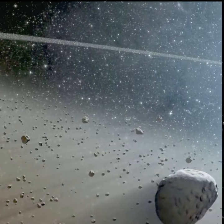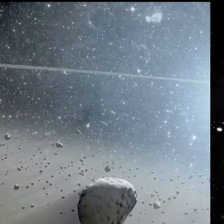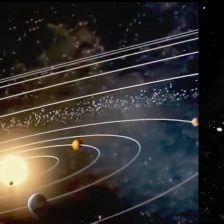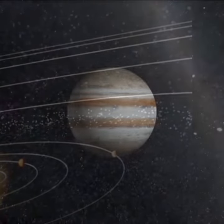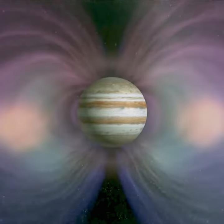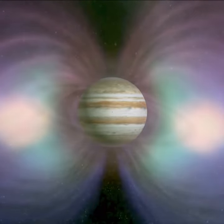These gaps in the asteroid belt are known as Kirkwood gaps, and they occur at distances where an orbit would be in resonance with the orbit of Jupiter. Jupiter's gravity is so strong that it makes asteroid orbits within the Kirkwood gaps unstable.